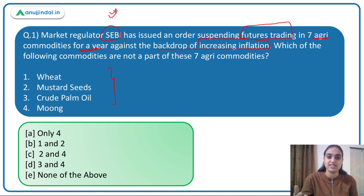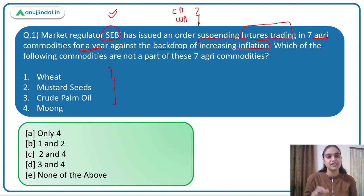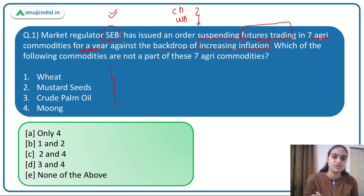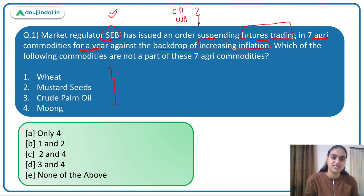In the last session I talked about CPI levels rising, WPI levels rising, and a major reason behind the rise is food inflation. That is why SEBI has taken the decision to suspend futures trading in certain agricultural commodities — against the backdrop of rising prices. Let's first understand what futures are, what derivatives mean, and what decision SEBI has taken and why.